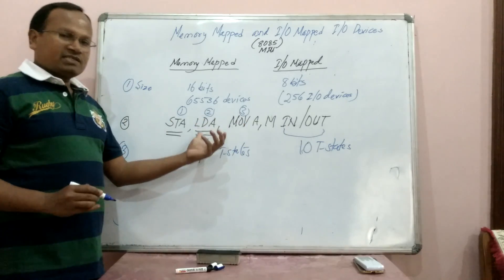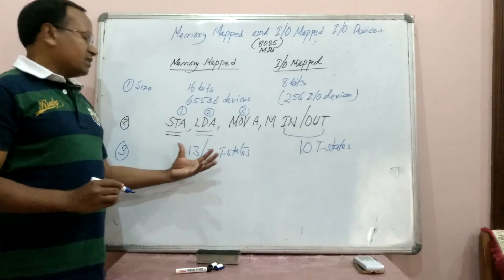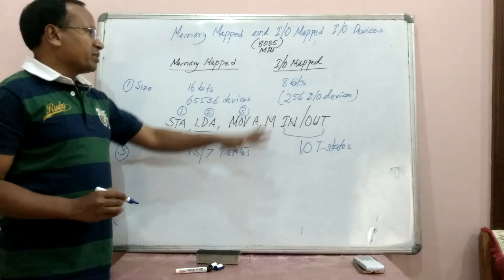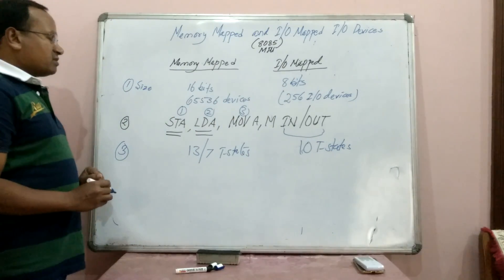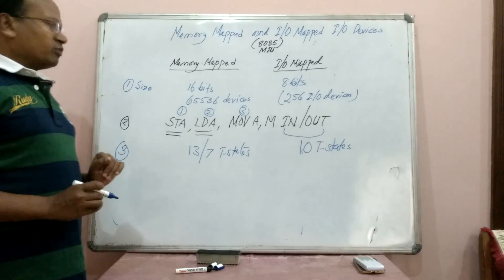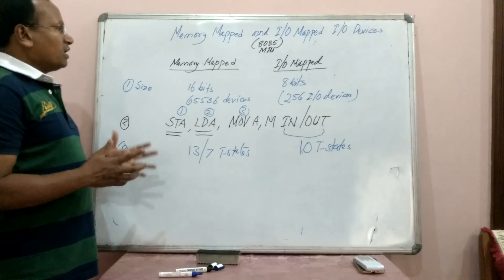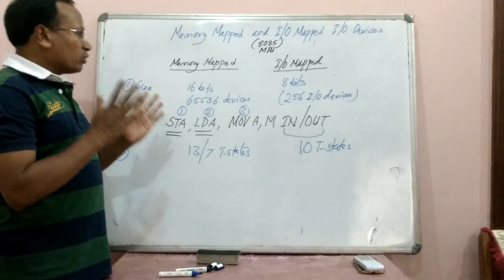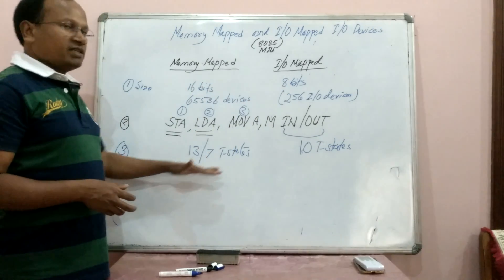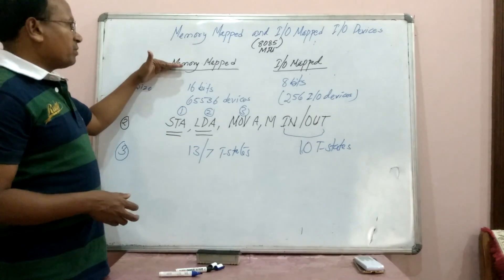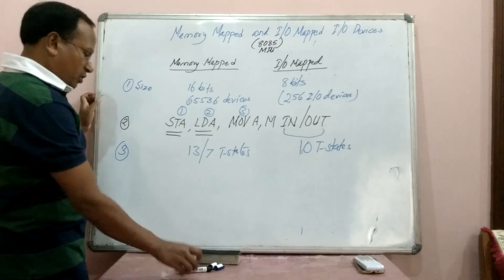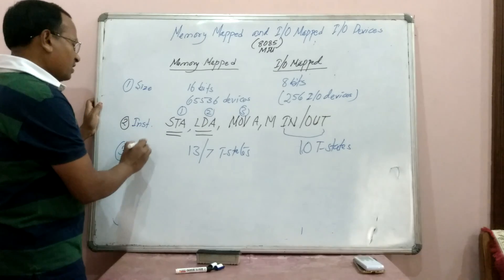Generally, LDA, STA, STAX, and LDAX instructions require 13 T states. So we can say that more T states are generally required in memory-mapped IO devices compared to IO-mapped IO devices. These are the 3 main difference points. For IO-mapped, the maximum devices are 2 to the power 8, and for memory-mapped it is 2 to the power 16. The 3 points are: number 1 — size, number 2 — instructions, and number 3 — T states.